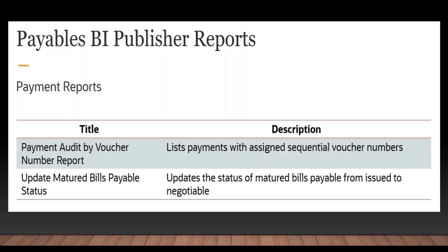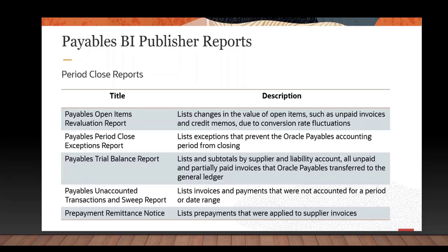Now we will briefly go over the period close reports. The Payable Period Close Exception Report lists exceptions that prevented the Payables accounting period from closing. The Payables Trial Balance Report lists and subtotals by supplier and liability accounts all unpaid and partially paid invoices that Oracle Payables transferred to the general ledger. The Payables Unaccounted Transactions and Sweep Report lists invoices and payments that were not accounted for a period or date range. Then there is the Pre-Payment Remittance Notice, which lists prepayments that were applied to supplier invoices.